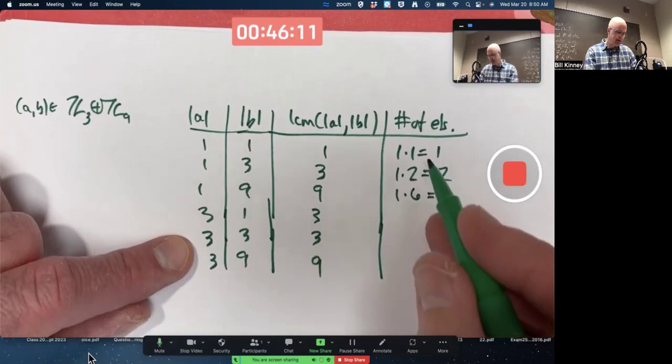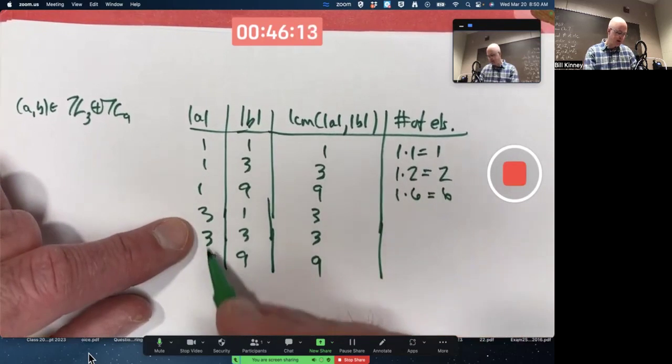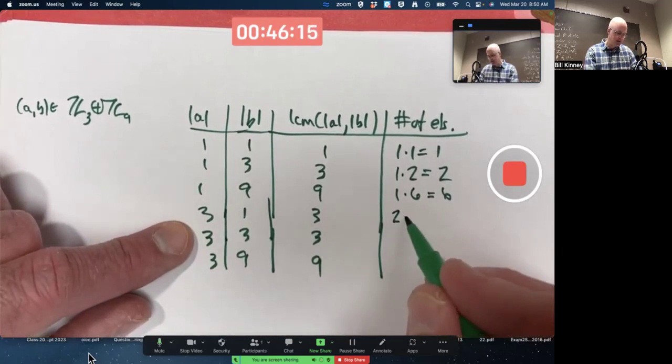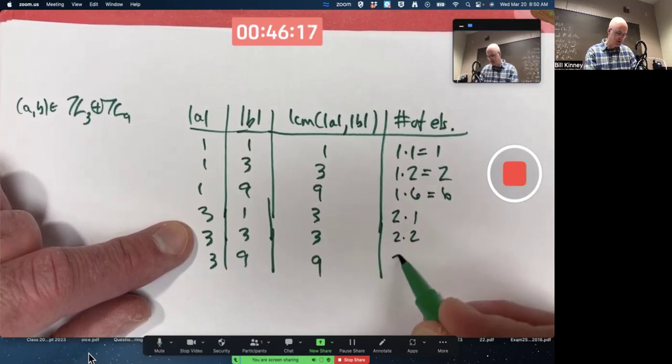This is a one times six. For the next set of rows, we'll have the same right numbers: one, two, and six. For the A, though, there's two possibilities. So we have a two times one, a two times two, and a two times six.